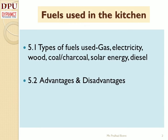In this chapter, we are going to discuss various types of fuels used in the kitchen, which include solid fuels like wood and charcoal, liquid fuels like LPG, CNG, kerosene, petrol and diesel, gaseous fuels like biogas and steam, and various other fuels, with their advantages and disadvantages.